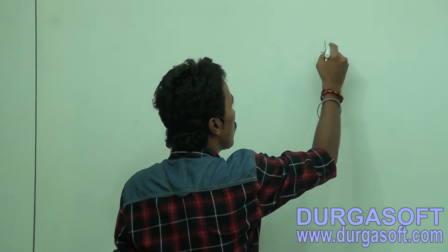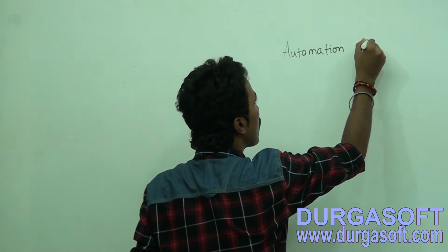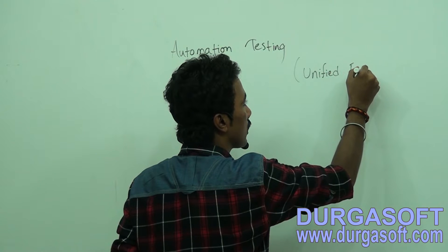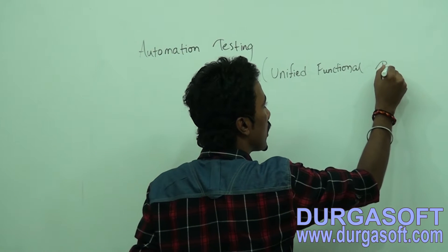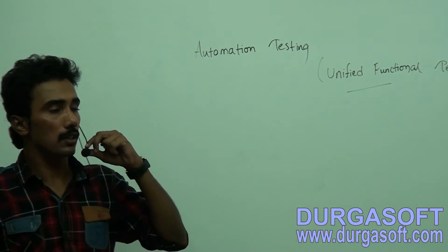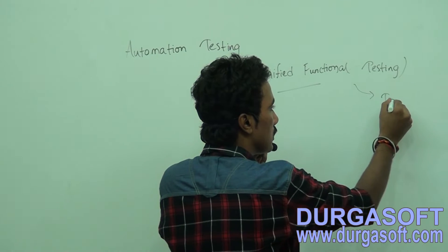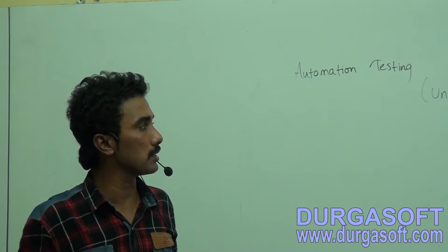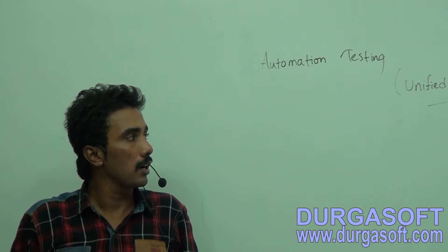Hi friends, this is Vijay and I'm here to explain about automation testing. We have different types of tools — either freeware tools or automation tools. I'm here to explain automation testing using a tool called UFT, which is nothing but Unified Functional Testing. This is a license-based tool, and maximum MNC companies will use this type of tool rather than going for a freeware source.